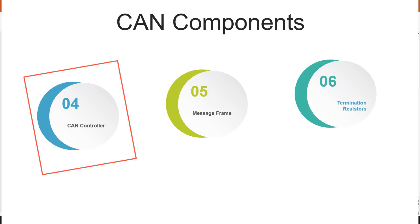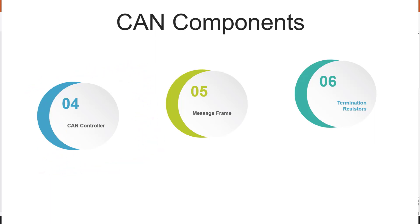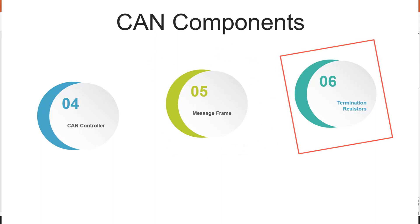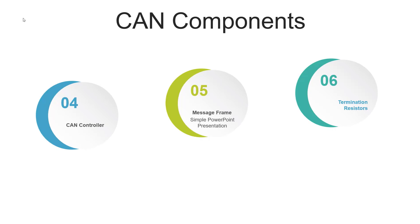The CAN controller is responsible for managing the communication process on the network. It handles tasks such as message assembly, error detection, and error handling, ensuring messages are transmitted and received correctly and managing the overall flow of data. Termination resistors are placed at both ends of the CAN bus to match the impedance of the bus and minimize signal reflections, ensuring stability and integrity of electrical signals by preventing signal distortion.